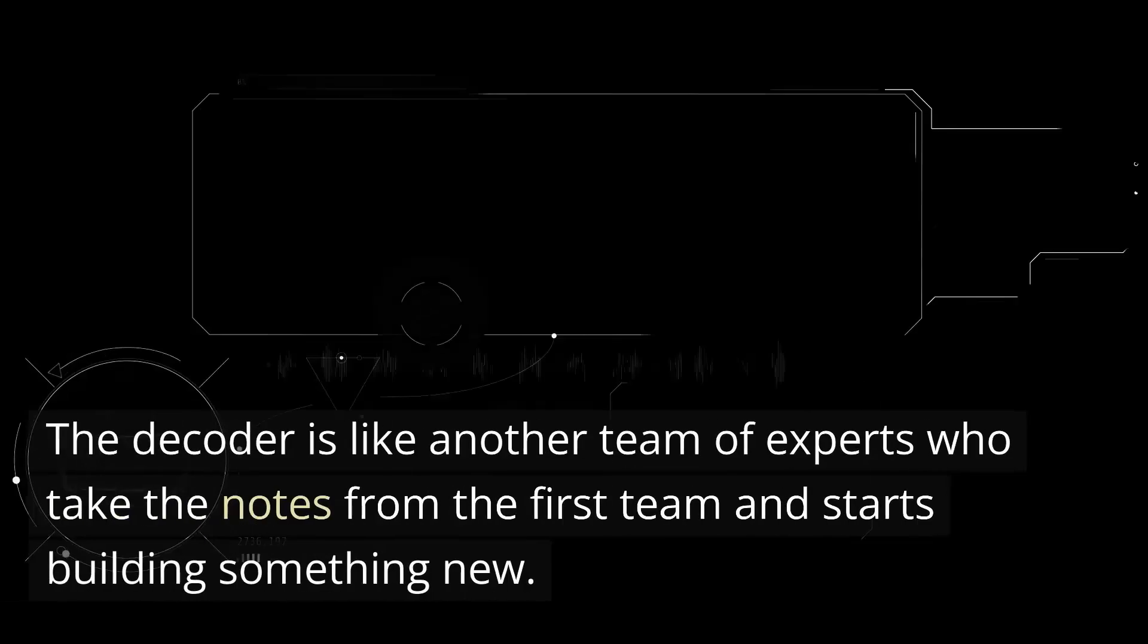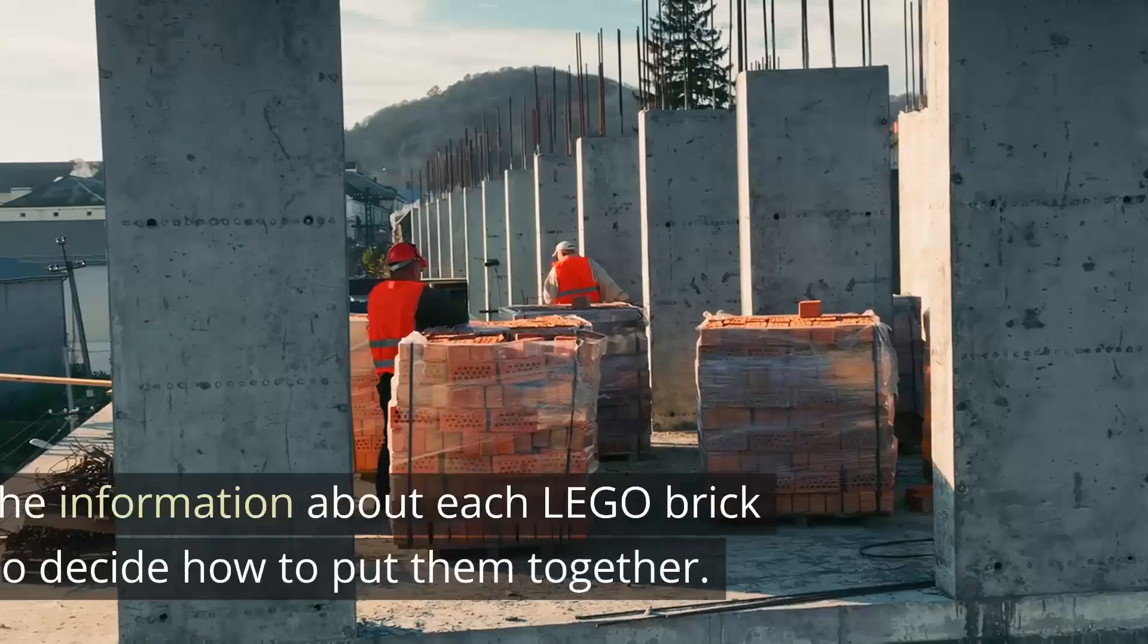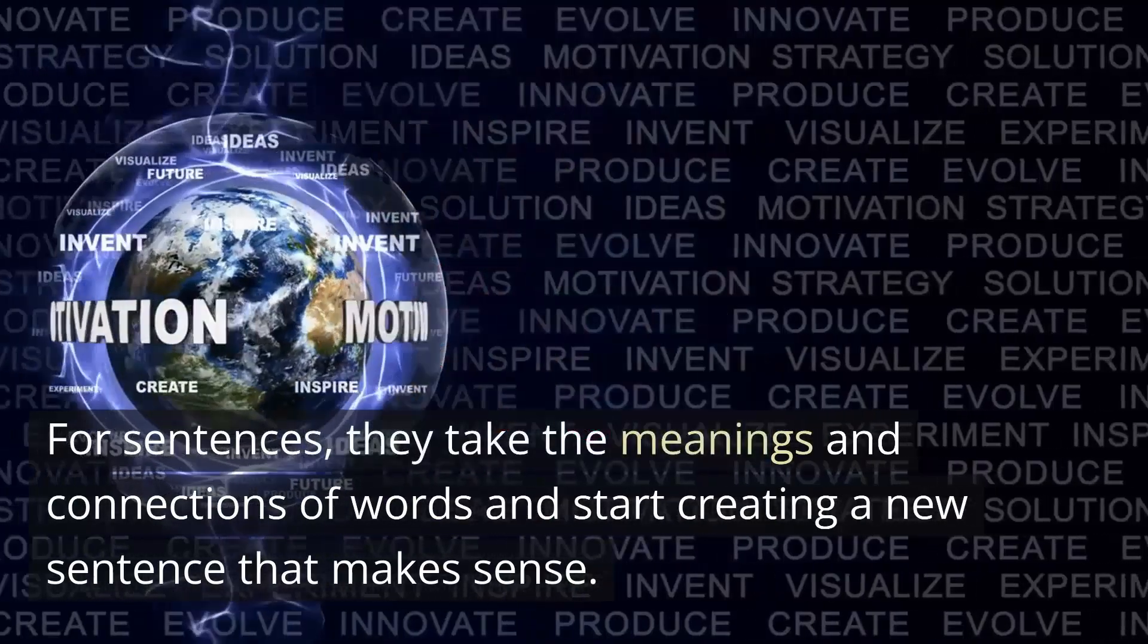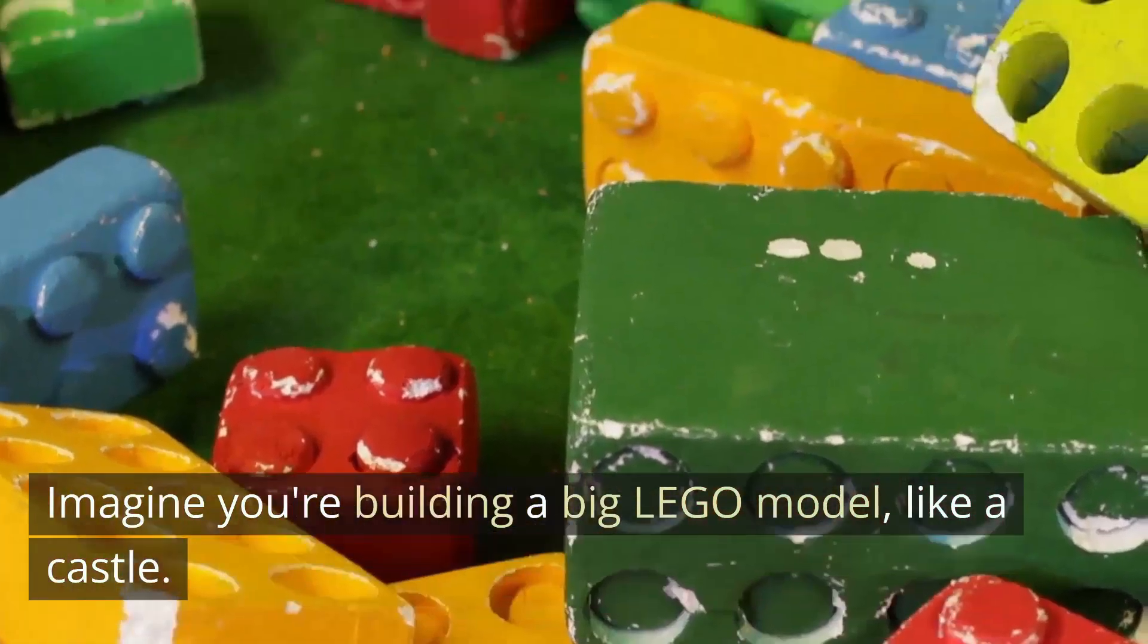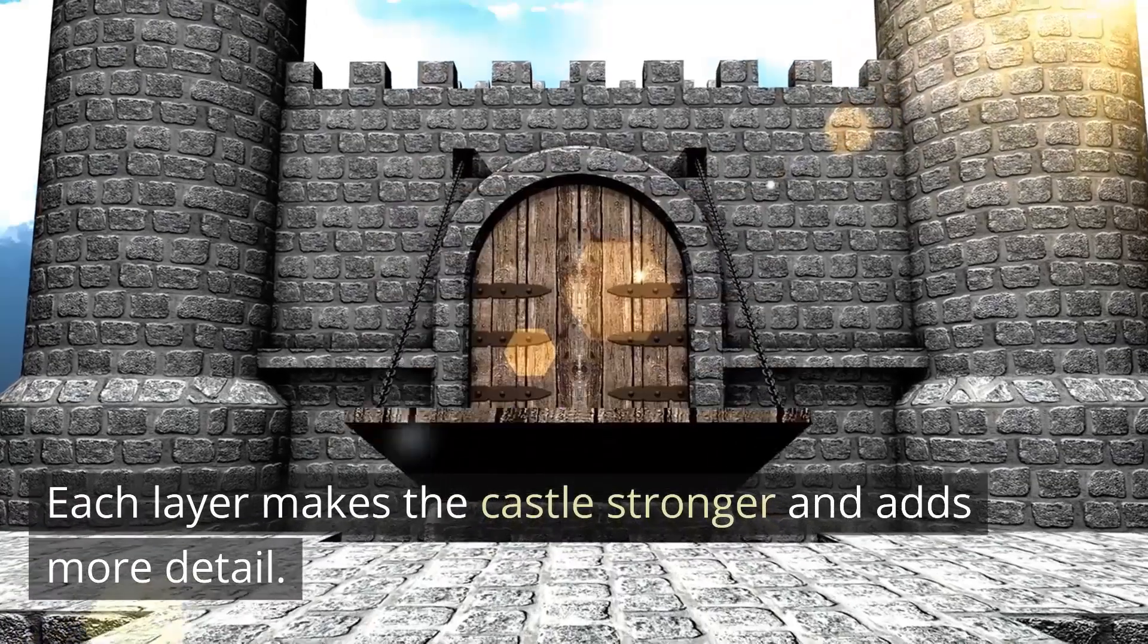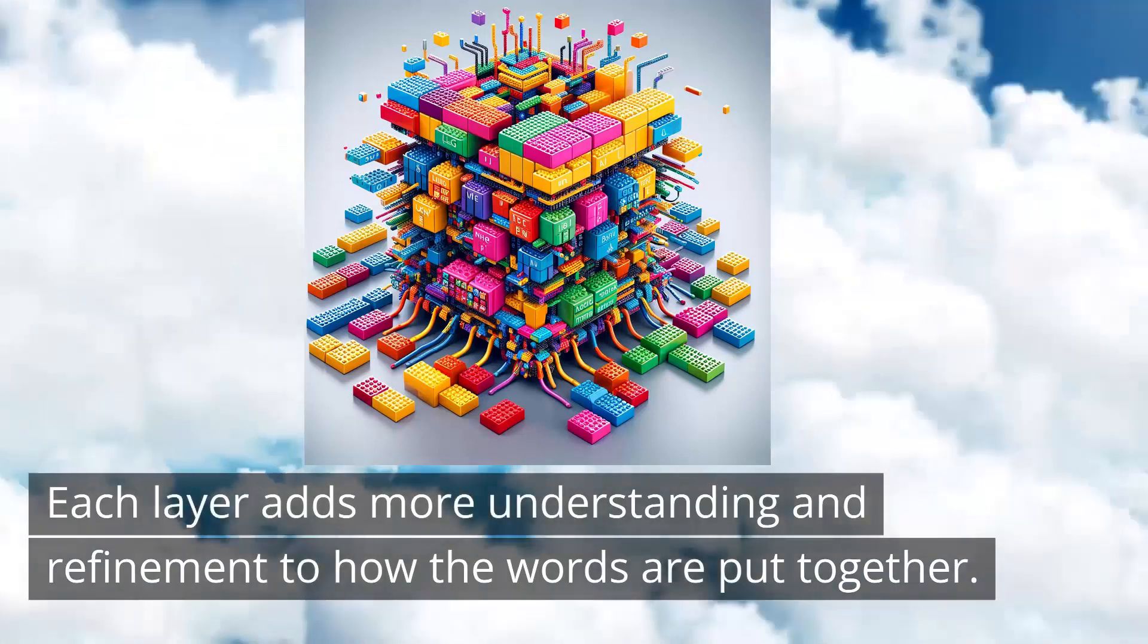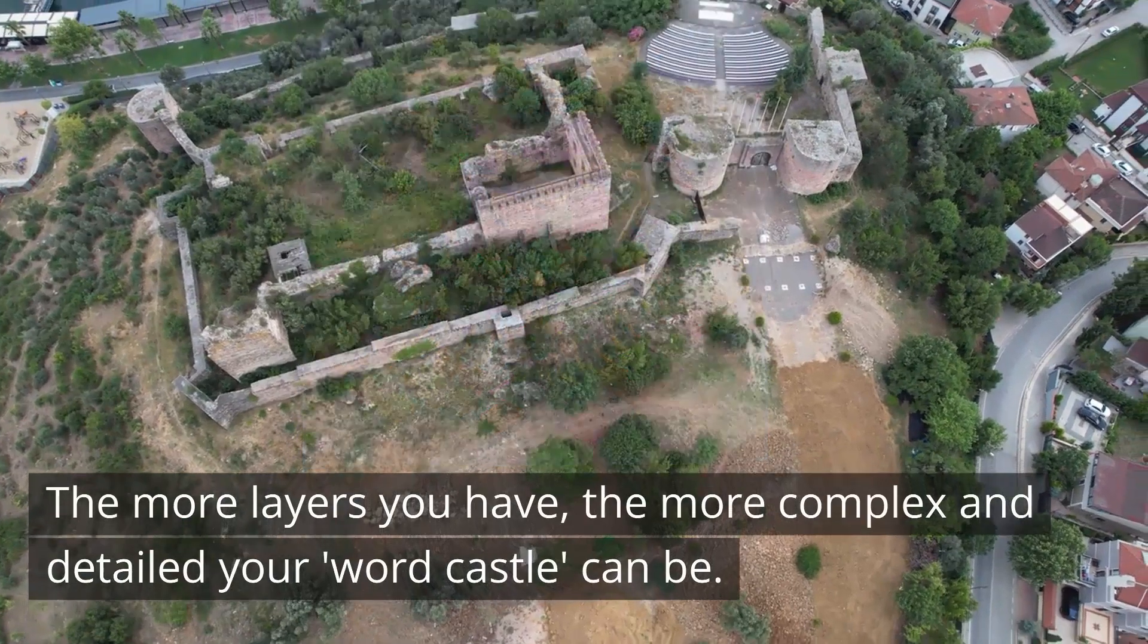They look at the color, shape, and how it might fit with other bricks. In the case of words, they're looking at the meaning of each word and how it fits in the sentence. Now the decoder. The decoder is like another team of experts who take the notes from the first team and start building something new. They use the information about each LEGO brick, or word, to decide how to put them together. For sentences, they take the meanings and connections of words and start creating a new sentence that makes sense. Okay, so what about layers? Imagine you're building a big LEGO model, like a castle. You don't just throw all the bricks together. You build it layer by layer. Each layer makes the castle stronger and adds more detail. In the transformer, layers work the same way. Each layer adds more understanding and refinement to how the words are put together. The more layers you have, the more complex and detailed your word castle can be.